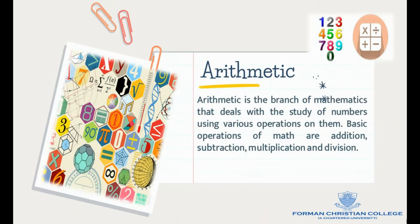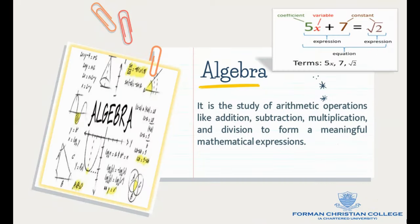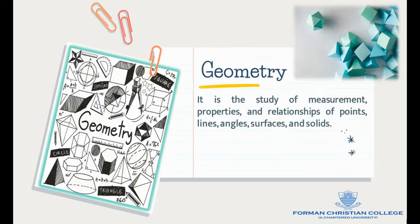Arithmetic is the branch of mathematics that deals with the study of numbers using various operations on them, whereas algebra is the study of arithmetic operations like addition, subtraction, multiplication, and division to form meaningful mathematical expressions. Geometry is the study of measurement, properties, and relationships of points, lines, angles, surfaces, and solids.